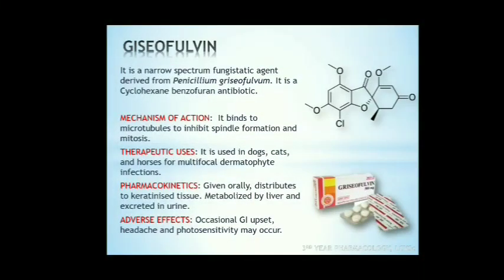Griseofulvin is another antibiotic, cyclohexane benzofuran in chemical nature. It is a narrow-spectrum fungistatic agent derived from Penicillium griseofulvum. It binds to microtubules to inhibit spindle formation and mitosis of fungi. It is used in dogs, cats, and horses for multifocal dermatophyte infections. It is given orally, distributes to keratinized tissues, and is metabolized by the liver and excreted in urine. Adverse effects include occasional GI upset, headache, and photosensitivity.